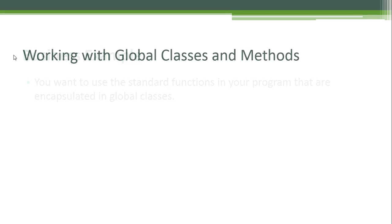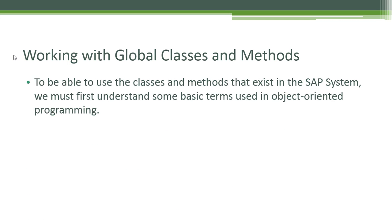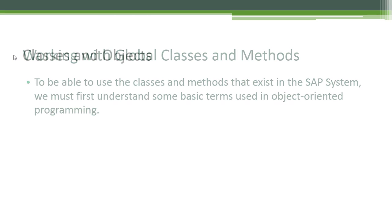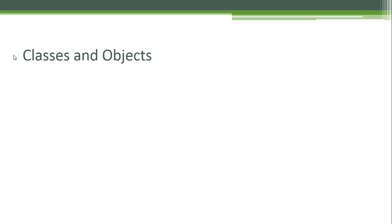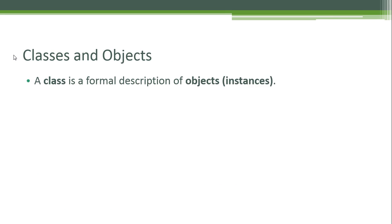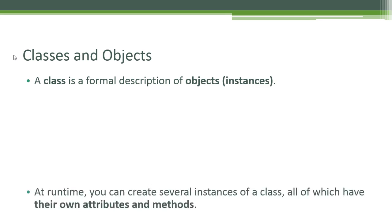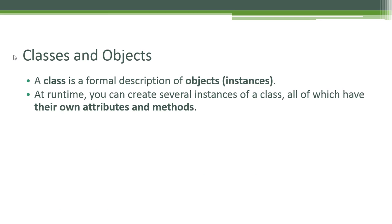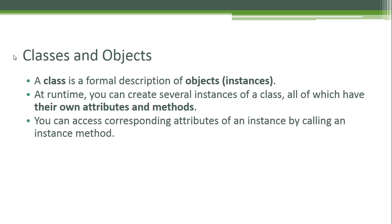Working with global classes and methods: to be able to use the classes and methods that exist in the SAP system, we must first understand some basic terms used in object-oriented programming. A class is a formal description of objects or instances. At runtime you can create several instances of a class, all of which have their own attributes and methods. You can access the attributes of an instance by calling an instance method.